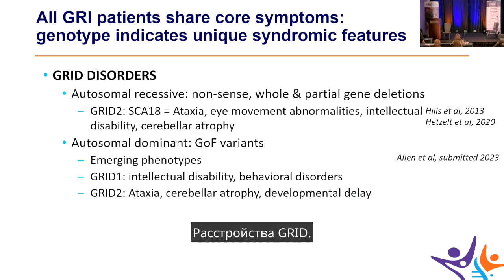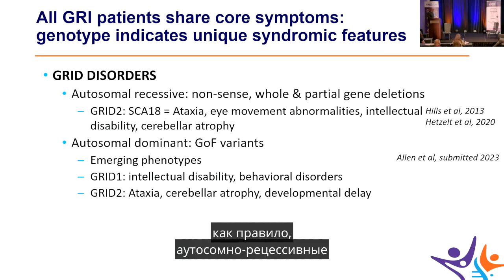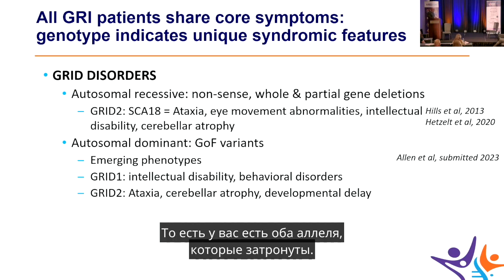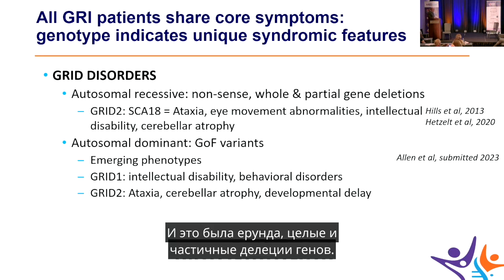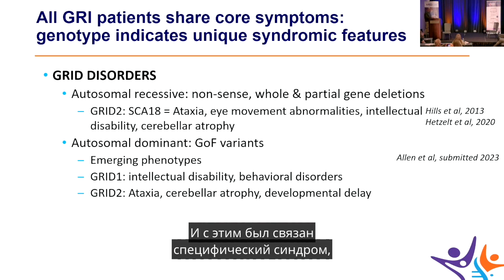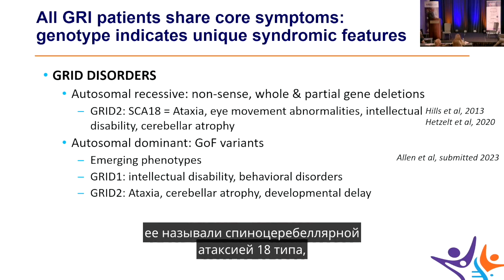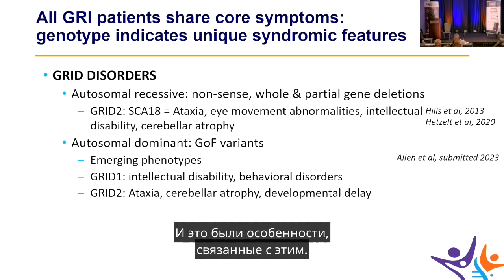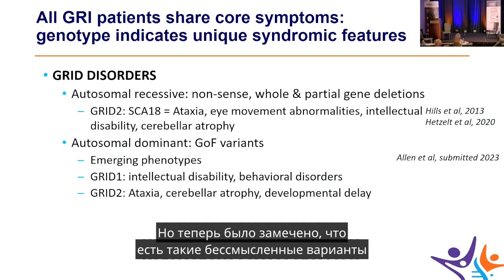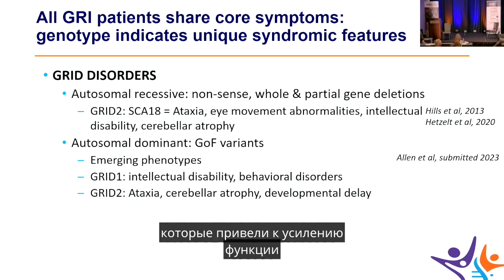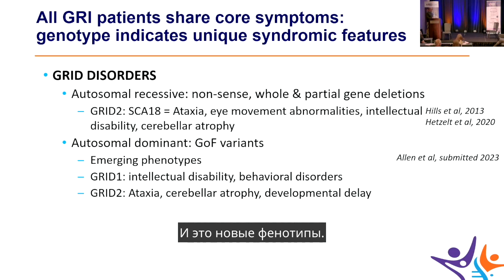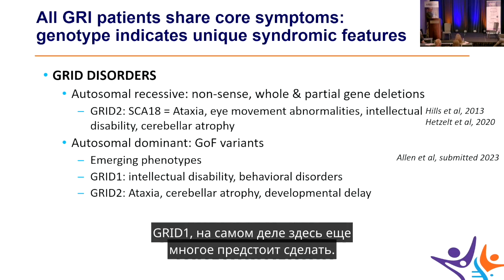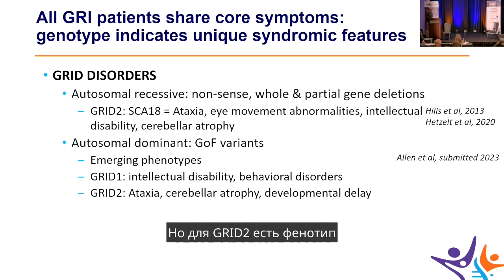GRID disorders were long thought to be autosomal recessive, involving nonsense variants and whole or partial gene deletions causing spinocerebellar ataxia type 18. However, missense variants causing gain of function in a single GRID allele are now emerging as new phenotypes. For GRID2, there is a phenotype associated with ataxia, cerebellar atrophy, and developmental delay, with a paper in progress from Steve's group.